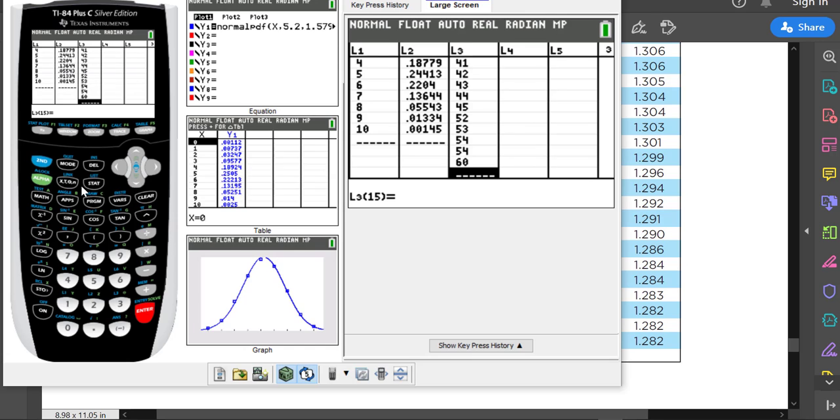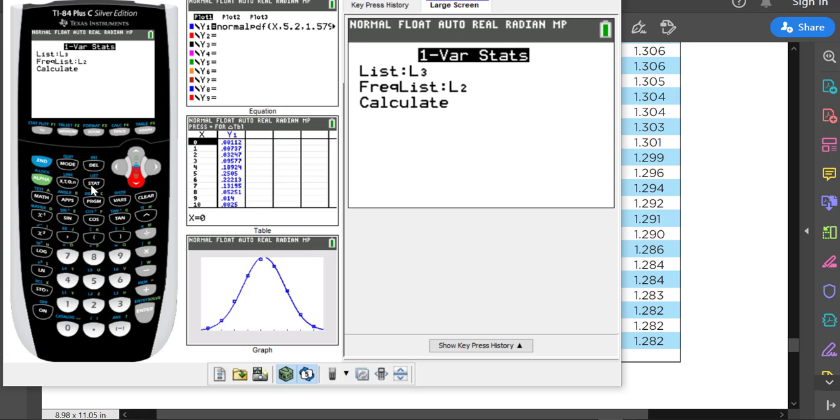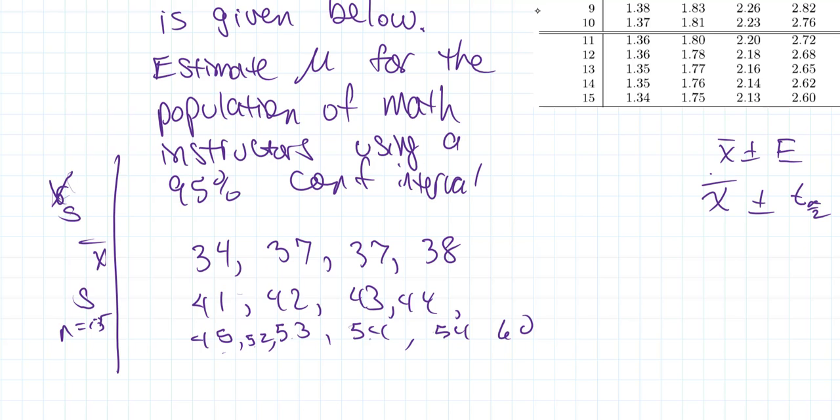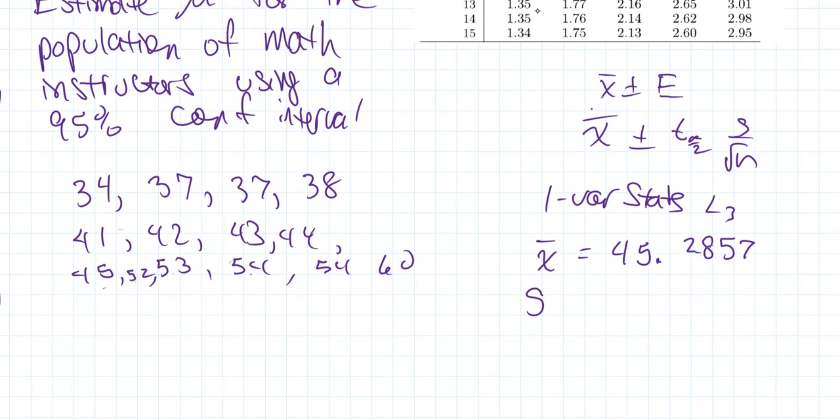And then, assuming I've made no mistakes, I'll go ahead and use 1-var stats for list 3. There is no frequency list associated with this. It's just simply list 3 that we're interested in. And the values that I get, it looks like x bar mean is 45.2857 and the standard deviation is 7.9752. So from 1-var stats on list 3, what we get is that the mean value is 45.2857 and the standard deviation for that sample is 7.975276.